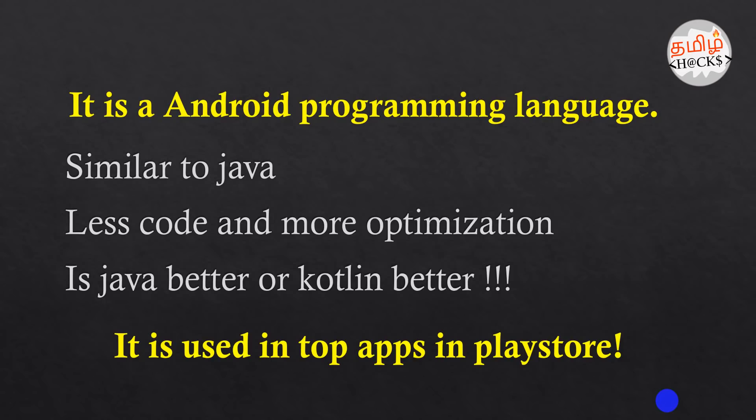We can use Java, and Kotlin is very similar to Java. Java is easy to use. What is the difference? If you have 10 lines of code in Java, you may have only 5 lines in Kotlin — so we can reduce lines of code by around 50 to 80%.